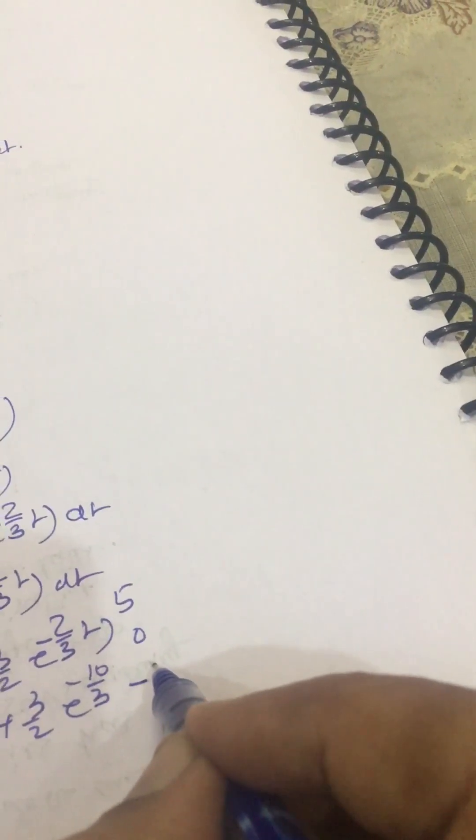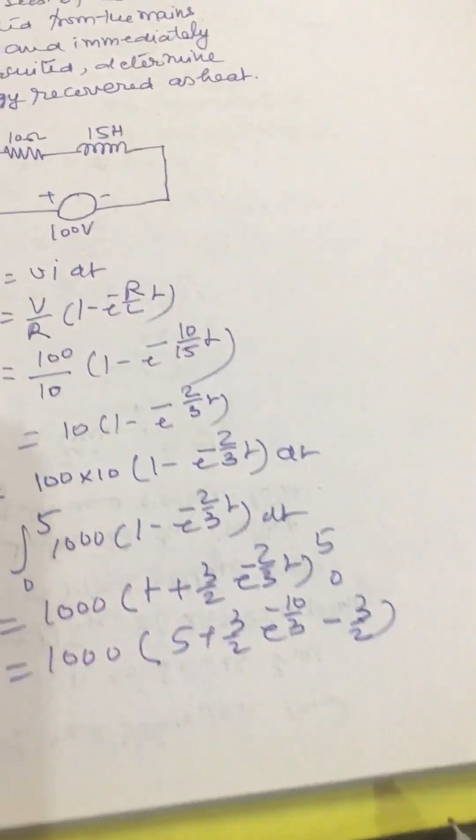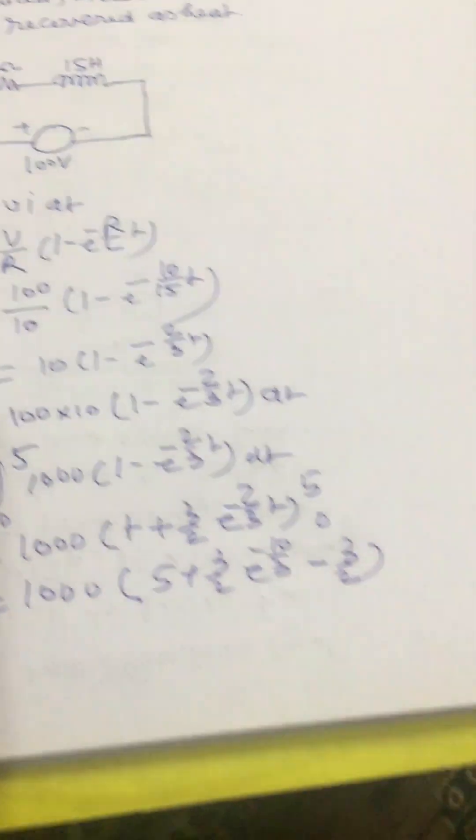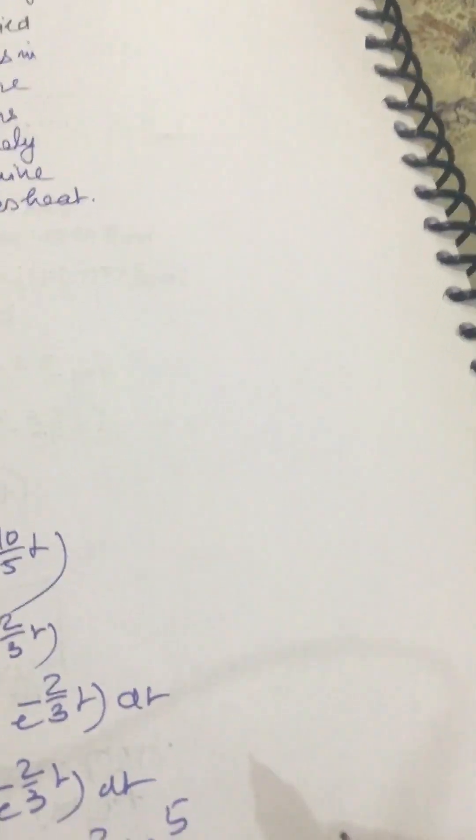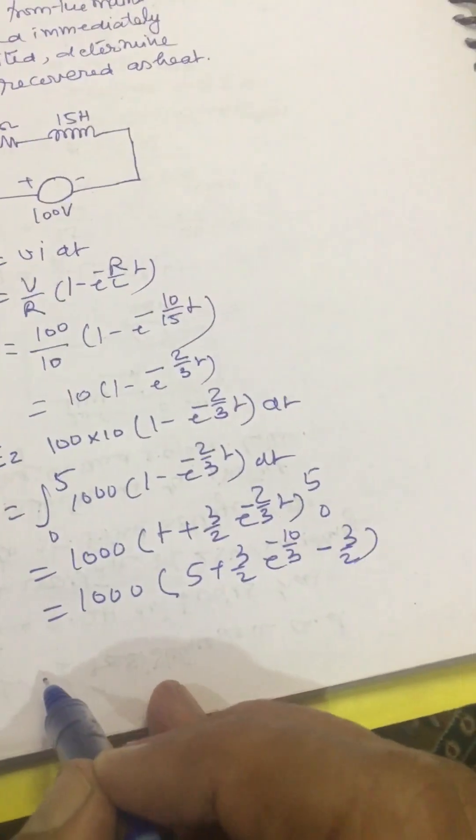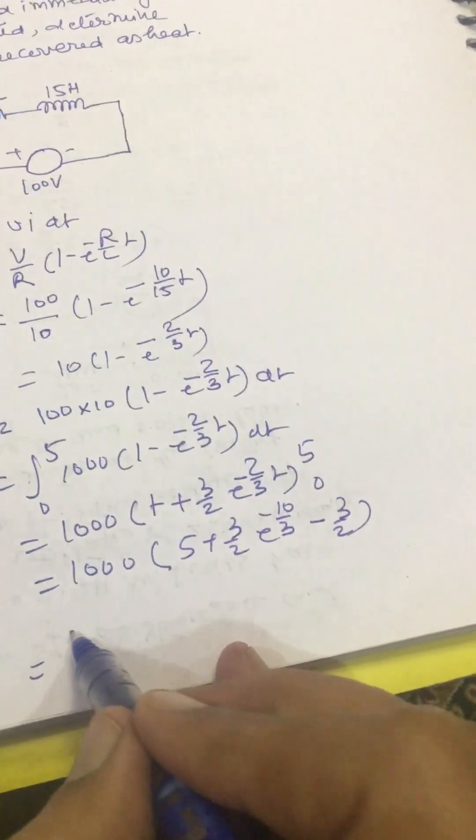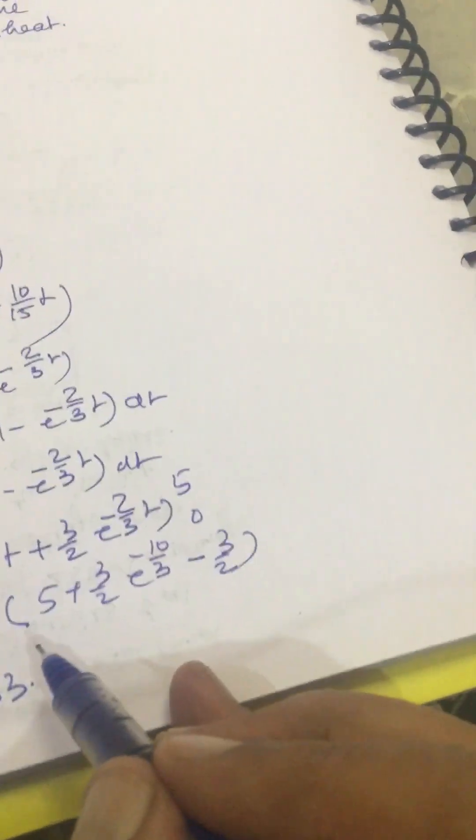Solving this we get the energy supplied in 5 seconds as 3553.5 joules.